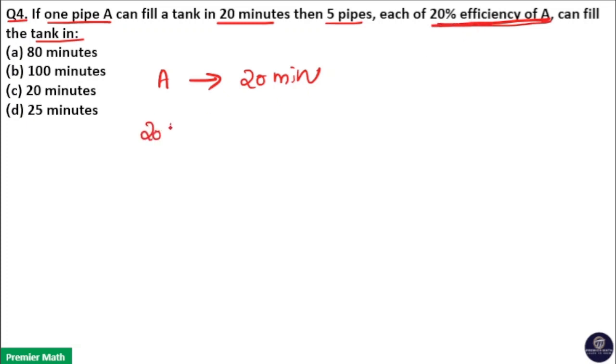So 20% of efficiency of A with five pipes, five pipes each of 20% efficiency. So 5 into 20% efficiency can fill a tank in how much time?